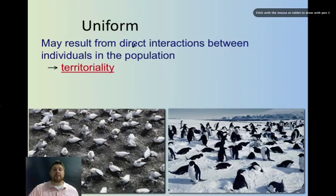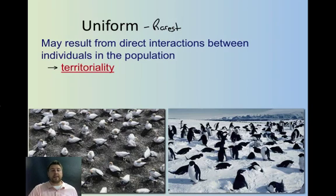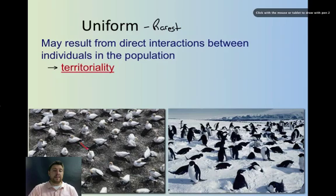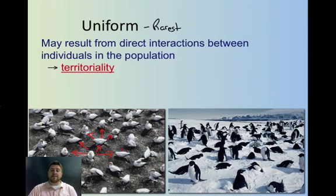Uniform spacing is probably the rarest you see in nature, because it's pretty rare to have a uniform spacing. Usually in nature it's due to territoriality — these birds have a certain space that they're going to defend. Since each bird needs that amount of space, they fight each other until they all have about an equal distance of space.